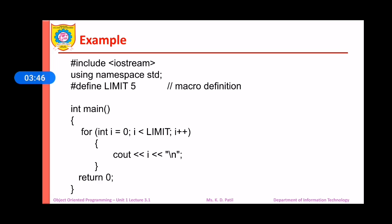Now, let us see the main function. In main function, we have for loop as integer i is equal to 0, i is less than LIMIT, i plus plus. Now here, LIMIT will be replaced by 5. So, we will get the output as i is equal to 0 to i is equal to 4.